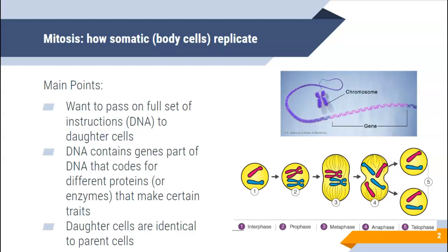We want to end up with two identical daughter cells at the end of our process — a complete set of DNA in both. DNA, of course, is the instructions for the cell, essentially coding for proteins. A gene is just a small segment of DNA on a chromosome, and that gene makes a thing — it could be an enzyme, part of a heart valve, or a liver part. Each gene gives instructions to the cell on how to make all the parts it might need. So with mitosis, the whole point is two identical cells with two full sets of DNA at the end.